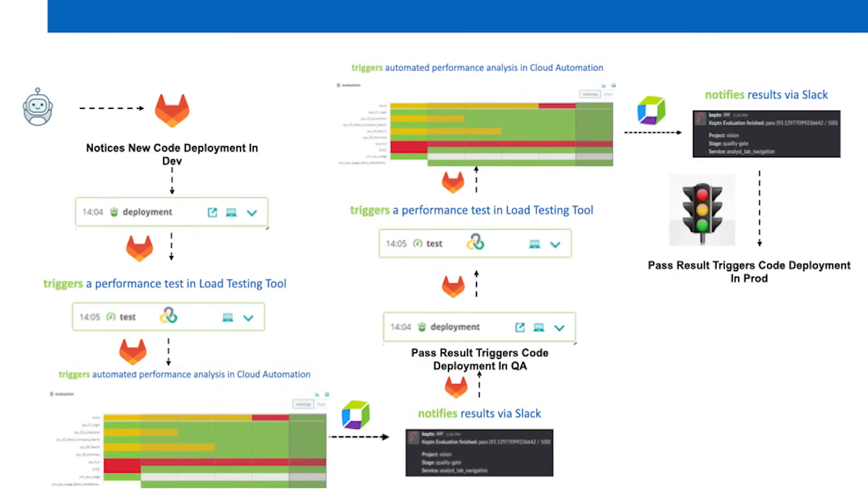What we used to call APM is now observability. We need to use the observability tools and platforms not only to monitor production but shift that left too. You've kind of built a machine that does that where you work. Can you describe the pipeline you built where you're using observability and load testing together?